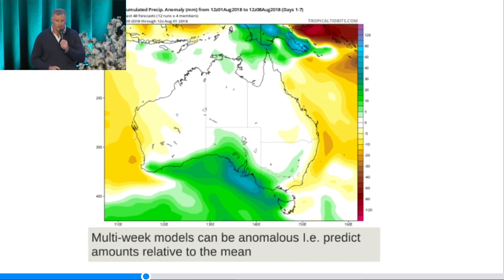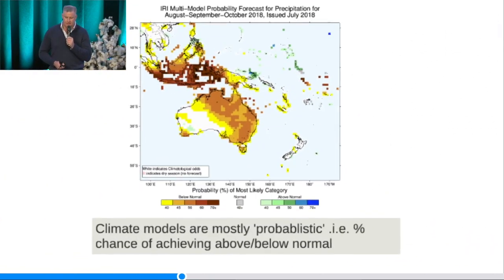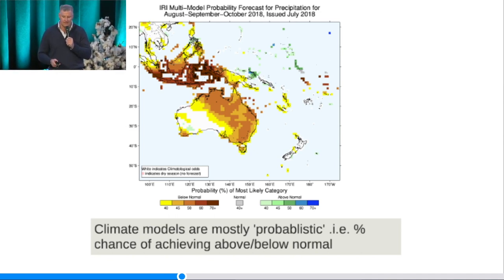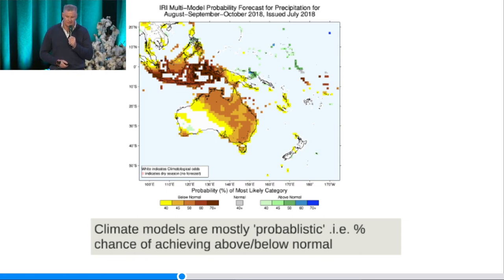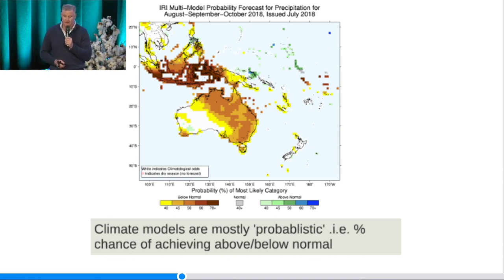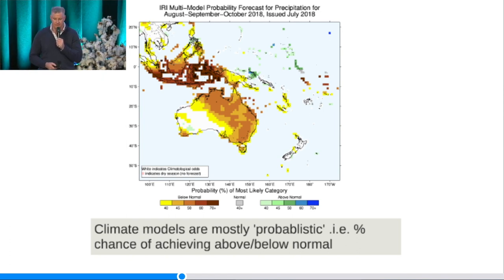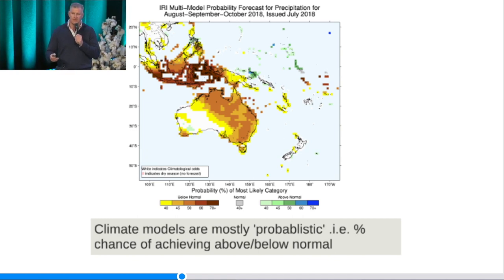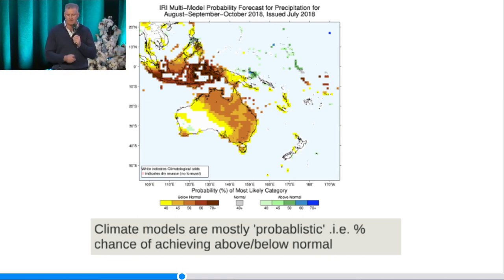Last of all, here's a seasonal model. This is a probabilistic model — it's important to tease out what that actually is. You see that brown and just think 'dry,' but it's not quite as simple as that. A probabilistic forecast shows, for example, New South Wales being in the 50% chance of below normal rainfall — five in ten years. You would expect five out of every ten years to achieve below normal rainfall under these conditions for those months. It's important to understand the differences between probabilistic anomalies and deterministic forecasts.